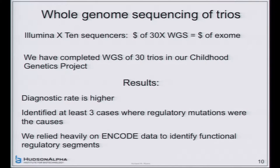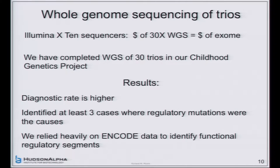Just in these 30 cases, we found three where we are almost certain — actually certain in a couple — that it's a regulatory change. You don't find those in exome sequencing. As you probably already know, there are probably more DNA sequence variants in regulatory elements that affect function than there are in coding regions. That's one reason to switch to whole genome. And we relied heavily on ENCODE to help make those decisions.